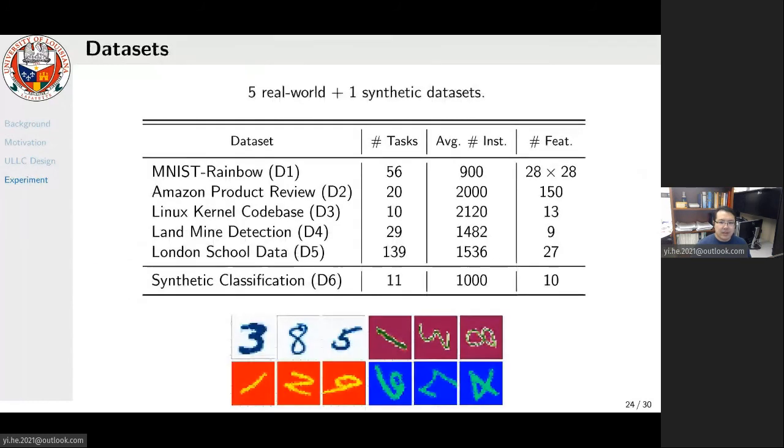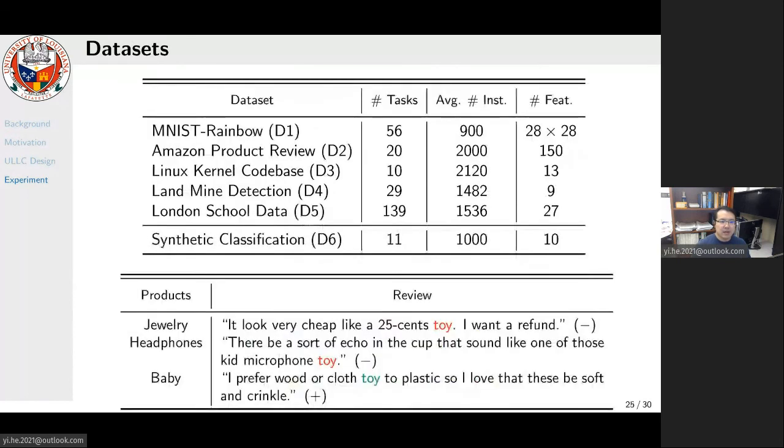Now let's see the experiments. We conduct experiments on five real-world datasets as well as a synthesized one. The first real dataset is made up from the MNIST dataset, which we call MNIST Rainbow, where we use different color maps and spatial transforms to create different tasks. The second real-world task is the Amazon product review.